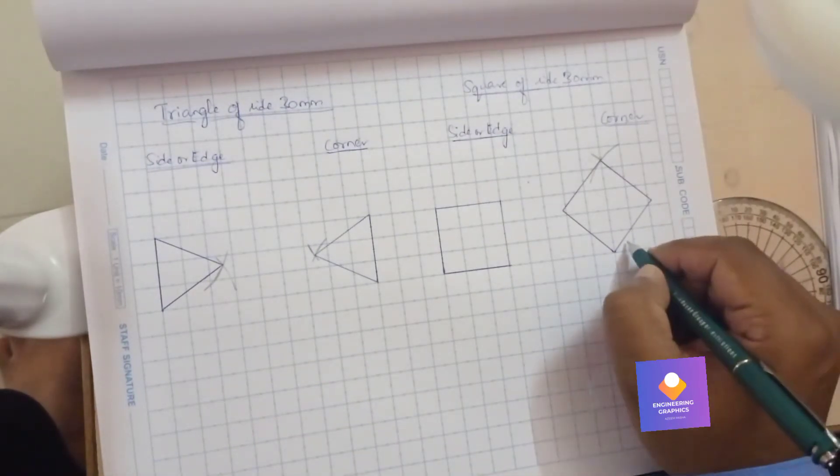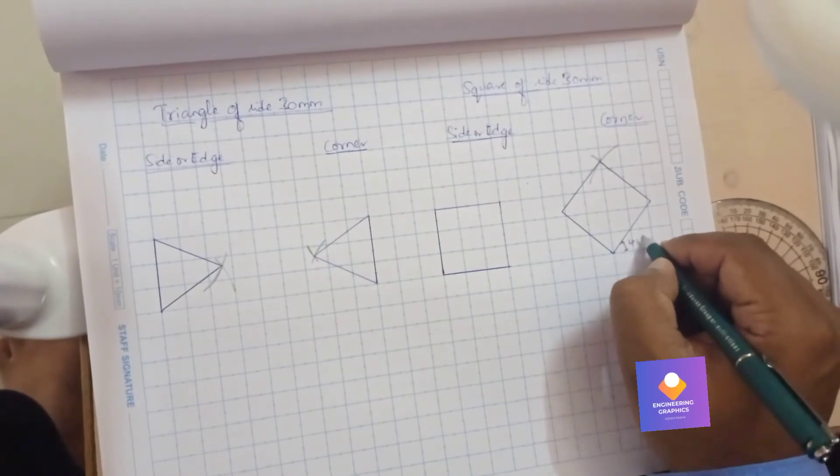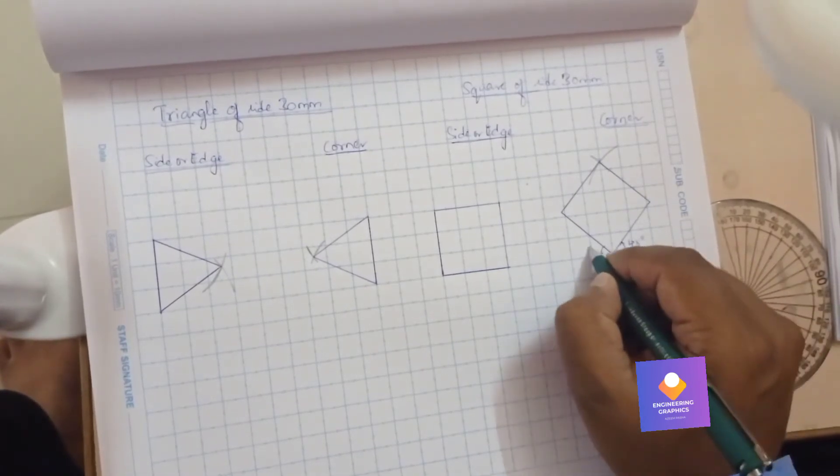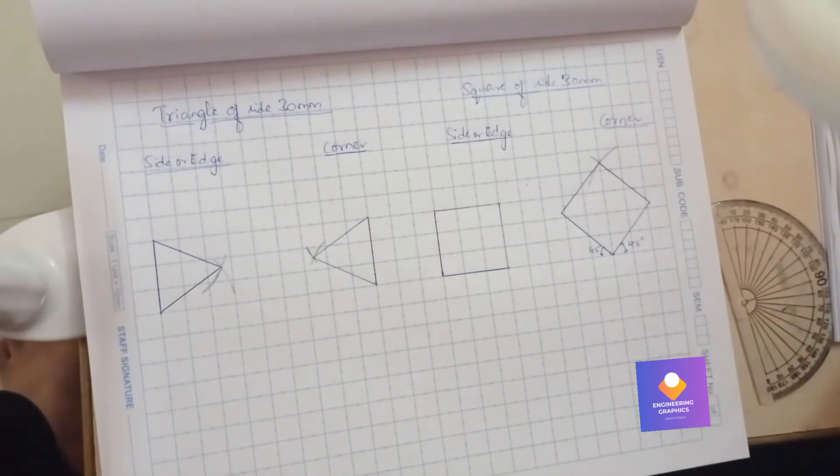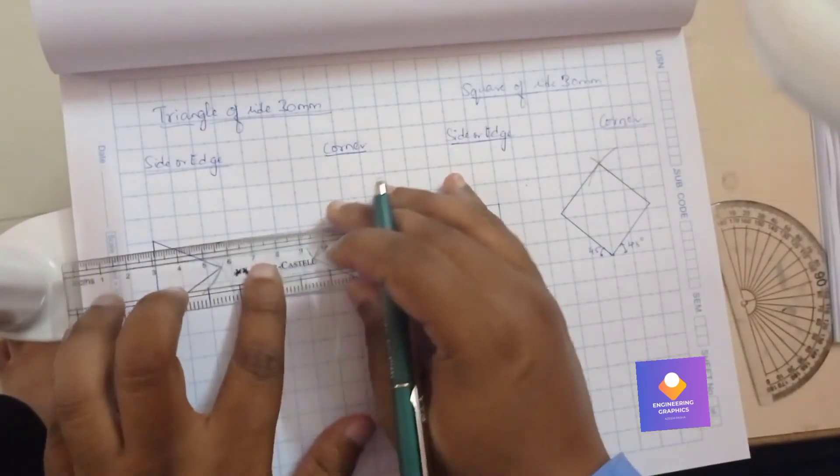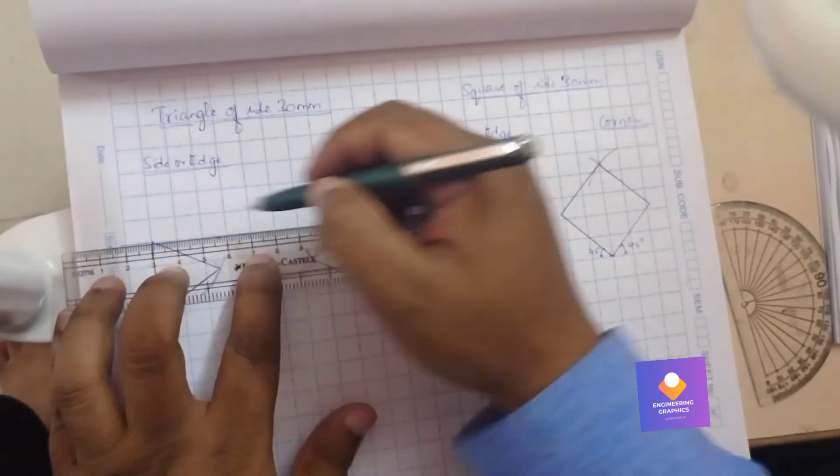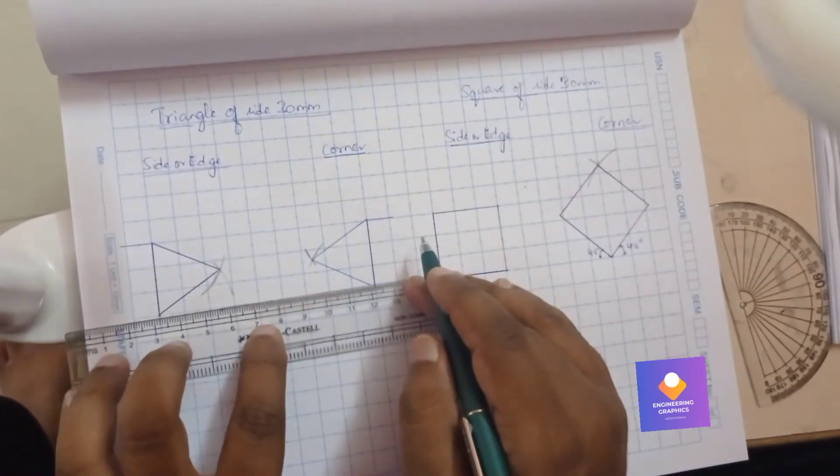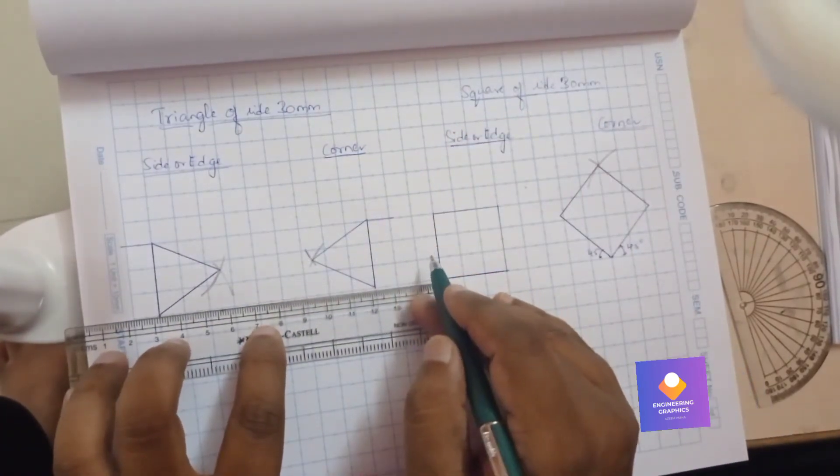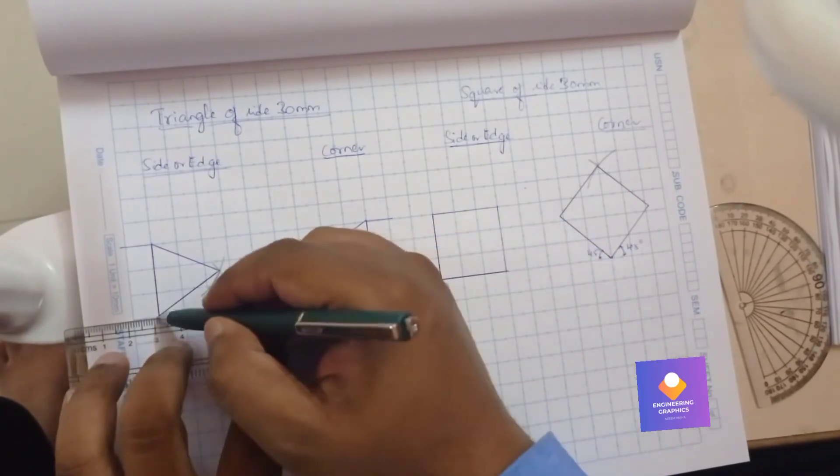So here for your remembrance, we will be elaborating the angle. So it is drawn with an angle of 45 degree and at the end we will show the dimensions. Okay, so it is drawn with a dimension of 30 mm, all are drawn with a dimension of 30 here.